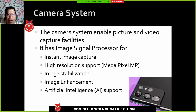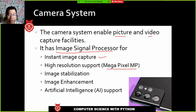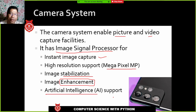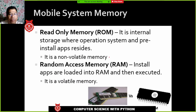The camera system enables picture and video capture. It has an Image Signal Processor that helps with instant image capture, high-resolution support in megapixels (MP), and image stabilization — so even if your hands are moving, you can take a good picture. It also has image enhancement features. Nowadays, mobile phones come with AI support, meaning the phone understands the environment and adjusts the image accordingly.